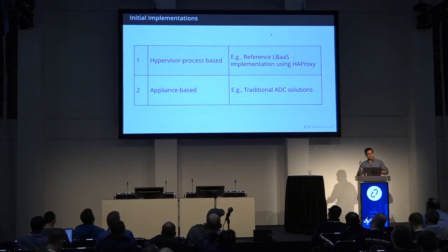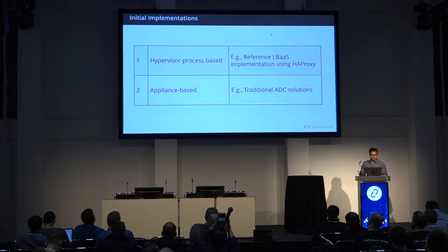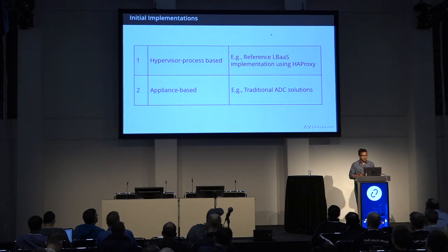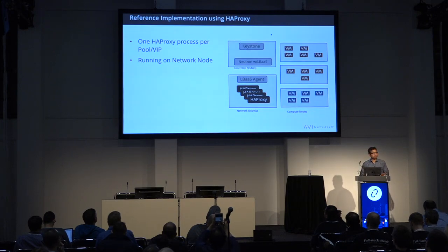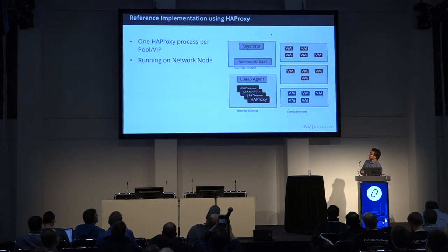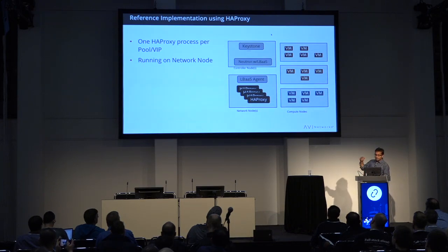Moving on to implementations — we talked about the APIs, now let's talk about implementations. We can categorize the initial implementations of LBaaS into two kinds: hypervisor process-based and appliance-based. The hypervisor process-based was the reference implementation using HAProxy in LBaaS V1 and the initial LBaaS V2. In the HAProxy-based implementation, you run an HAProxy process for every load balancer instance on the OpenStack network nodes, and there is an LBaaS agent that starts and stops those HAProxy processes.